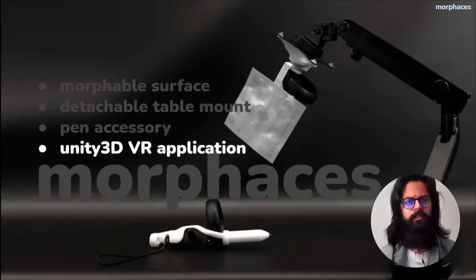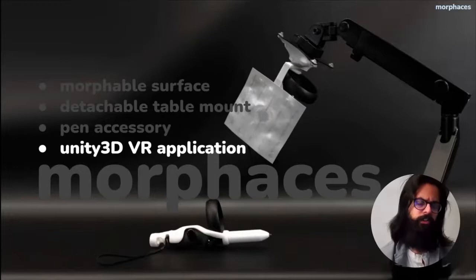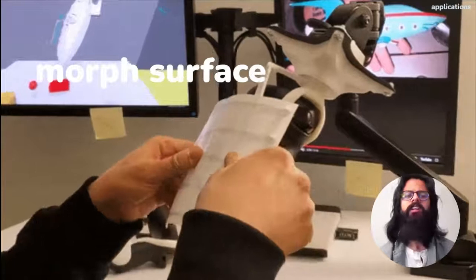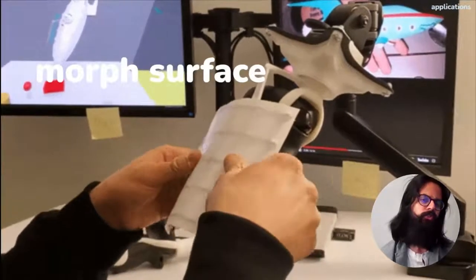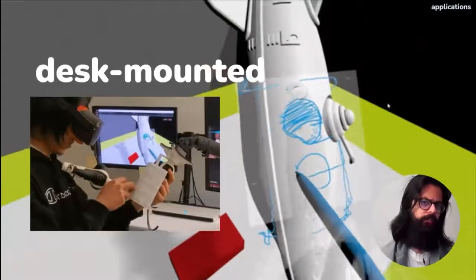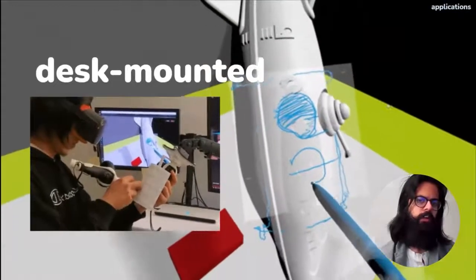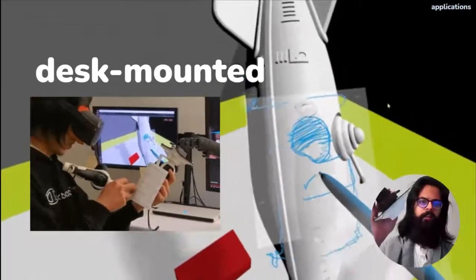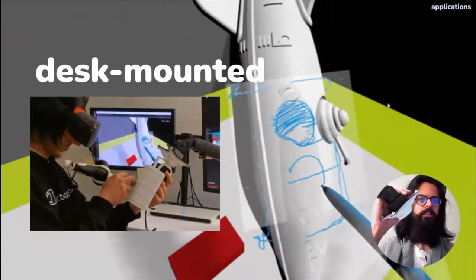What affordances does the Morpheus ecosystem provide the user? Well, first and foremost, the user can morph the surface. But in addition to that, the user has two modes of working with Morpheus. The first is the desk-mounted mode, where the surface is attached to the desk mount, and the desk mount provides stability that the user can use.